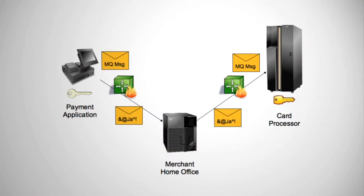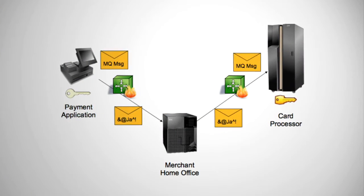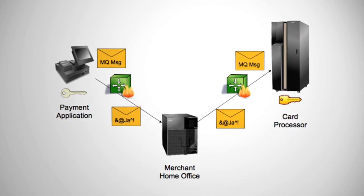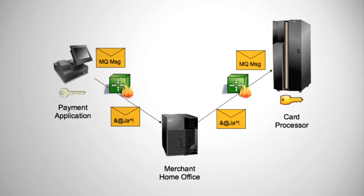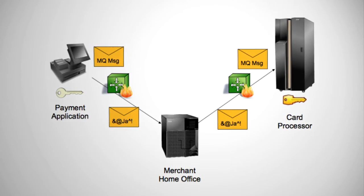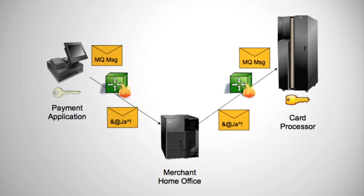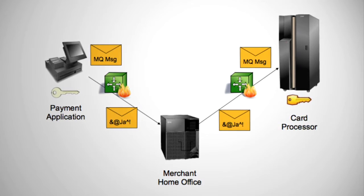WebSphere MQ AMS encrypts messages at the point of production and then decrypts and authenticates them at the point of consumption. Because all points in between have no access to decryption keys, the scope of your audit can be greatly reduced, resulting in a cost savings that can offset part or all of the cost of adding crypto functionality.